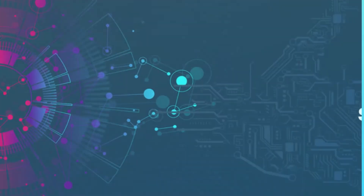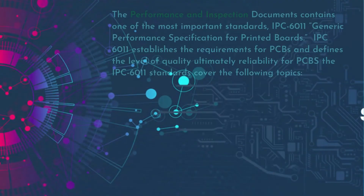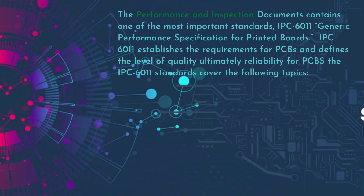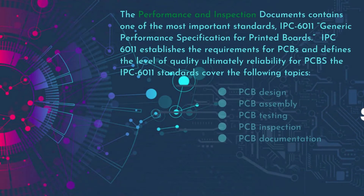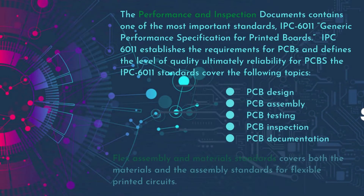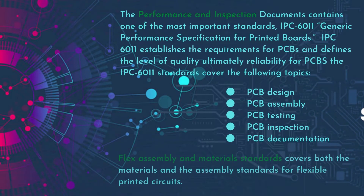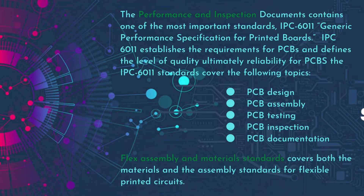The performance and inspection documents contain one of the most important standards: IPC-6011 Generic Performance Specification for Printed Boards. IPC-6011 establishes the requirements for PCBs and defines the level of quality — and ultimately reliability — for PCBs.